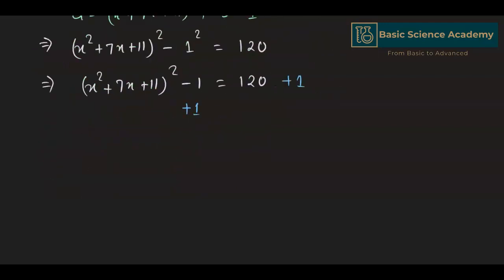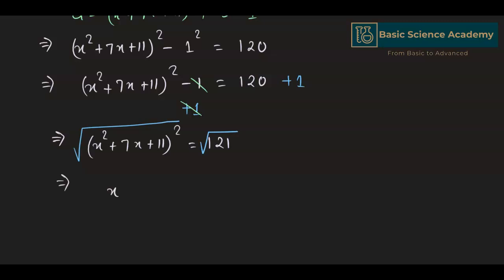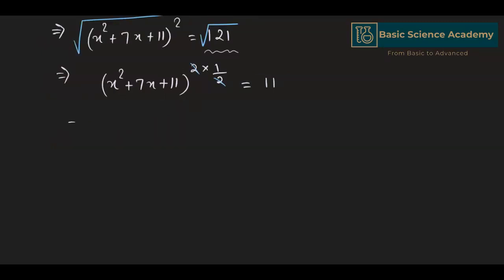Adding 1 to both sides, the −1 and +1 cancel out to give (x² + 7x + 11)² = 121. Taking the square root of both sides gives x² + 7x + 11 = 11. Subtracting 11 from both sides, 11 cancels out to give x² + 7x = 0.